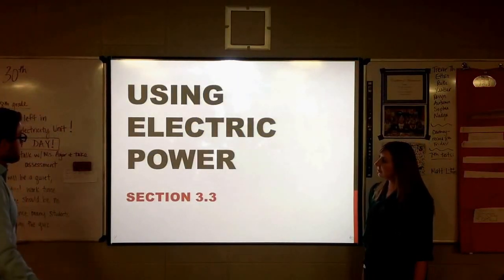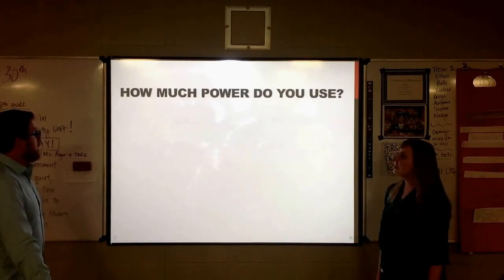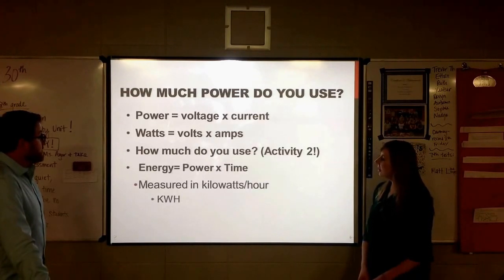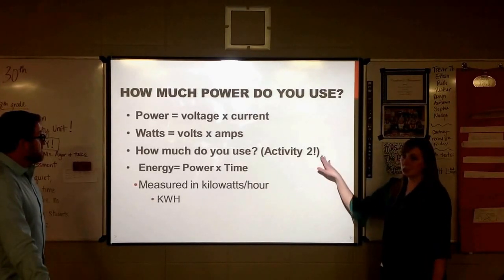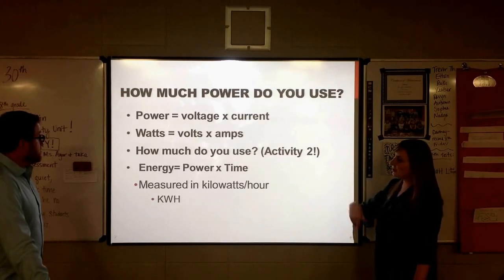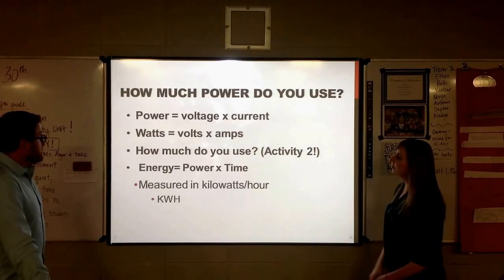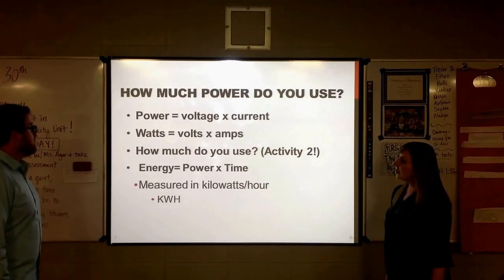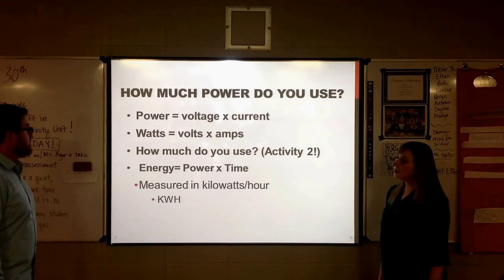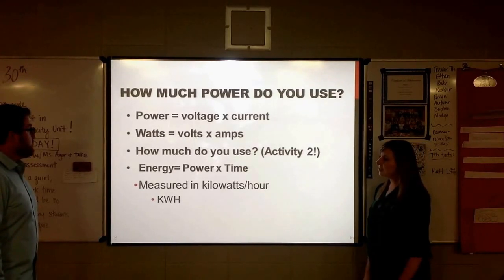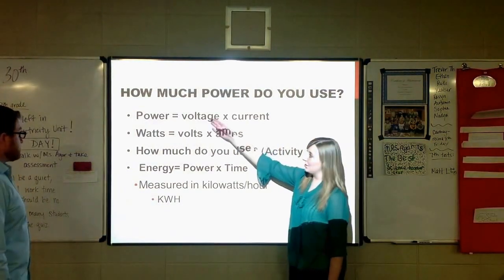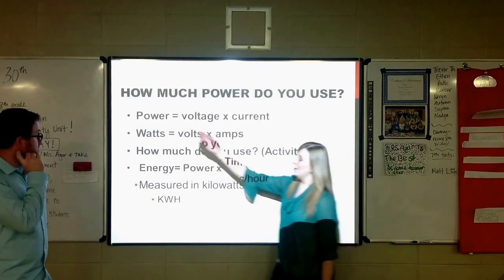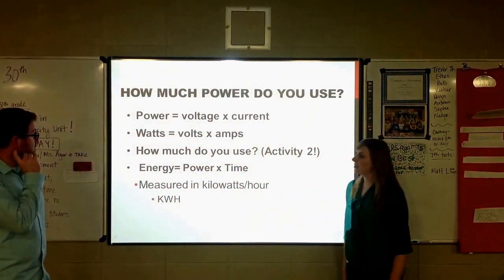All right, third section is about using electric power. This is very short. We are going to have an activity in this unit about how much power do you use. This is going to be activity two. A few equations for you here. Power is equal to voltage times the amount of current. Watts is equal to volts times amps. Some of these words should be very familiar to you. We've talked about voltage being measured in volts, current being measured in amps, and now you'll notice that power can be measured in watts.